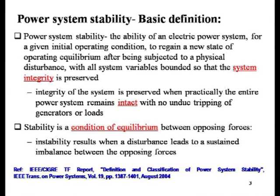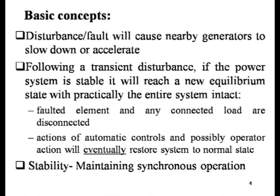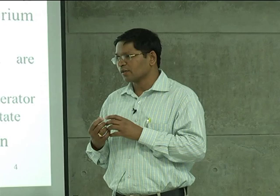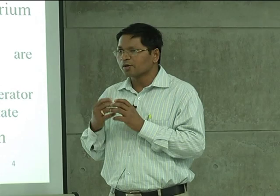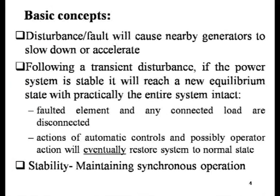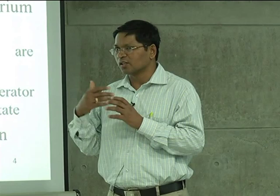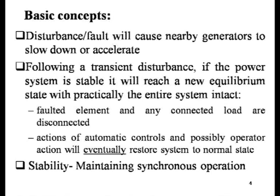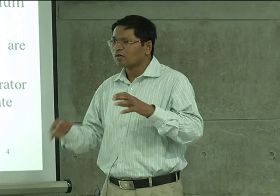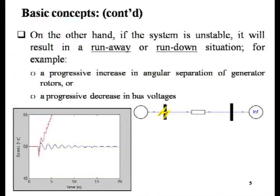Not only disturbance in terms of load variation, but it could also be a fault. Whenever a fault occurs, the generator rotor angles or the frequency will fall out of step. If you are not able to maintain the generator terminal voltage or the frequency within limits, the generator is falling out of step — the generators will either slow down or accelerate. If you are able to maintain stability, you have synchronous operation — one grid here, another grid here — these systems are interconnected, and if the system remains intact, the system is stable.